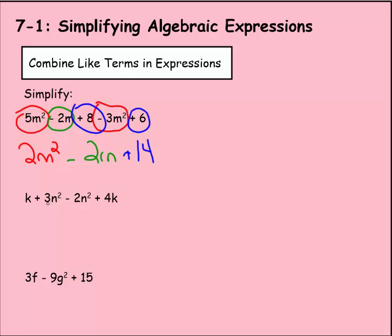We have k + 3n² - 2n² + 4k. First, I look at the exponents. I see a squared here and squared here. And I notice that their variables are the same. So these can be combined. Positive 3n² minus 2n². 3 minus 2 would just be 1n². And you can just write that as n².